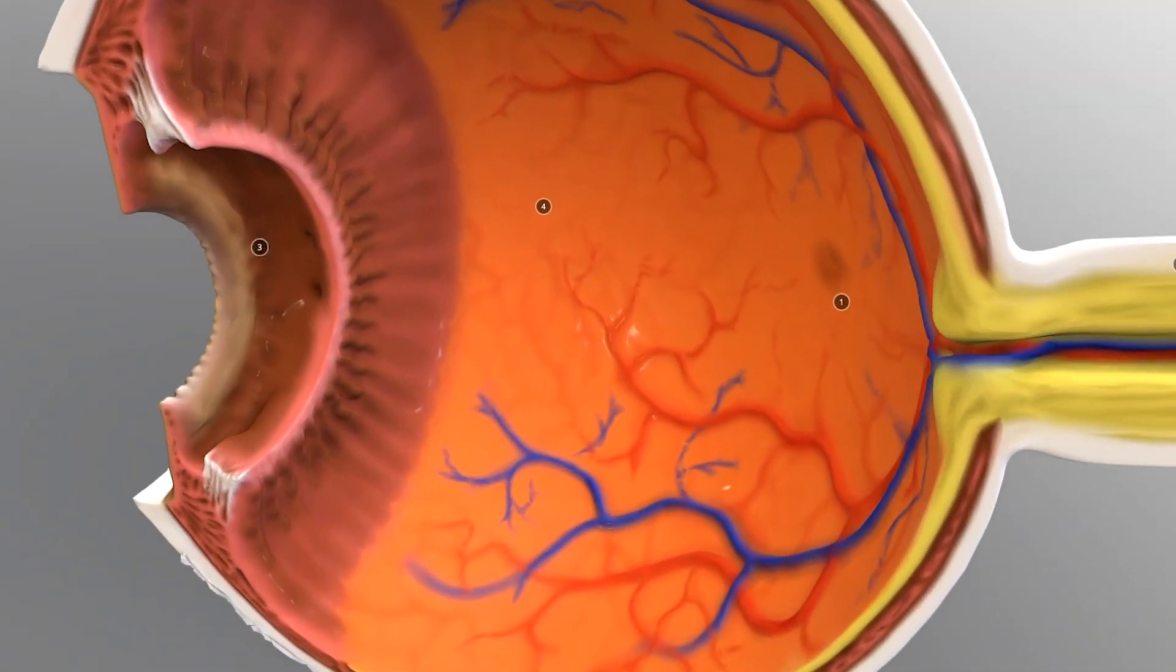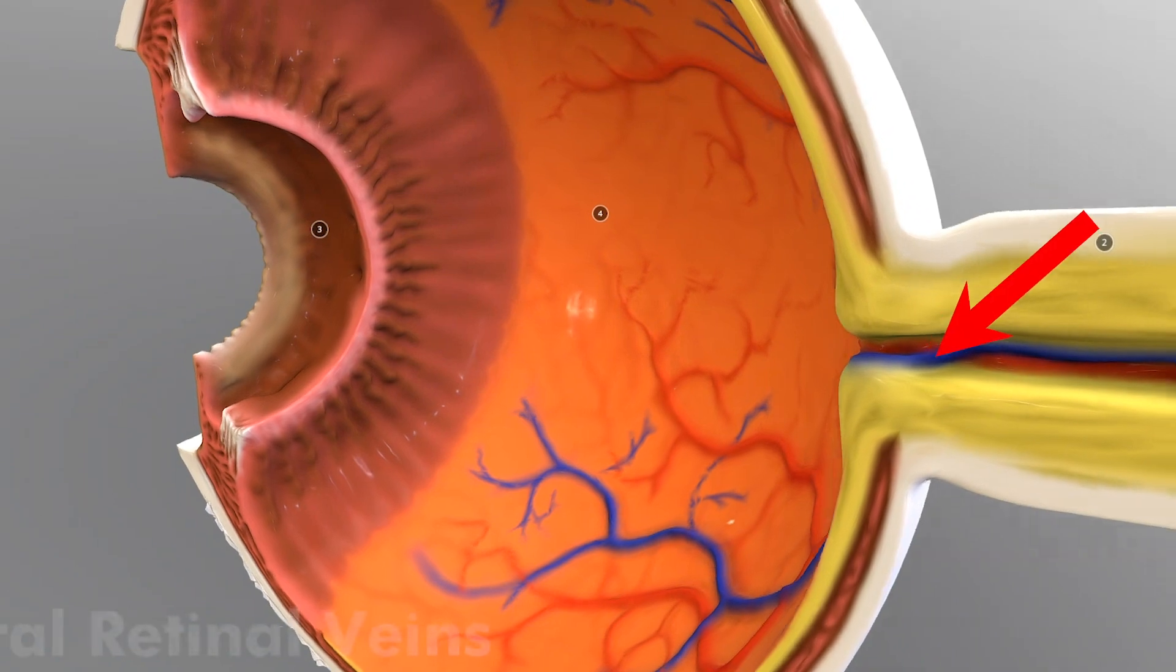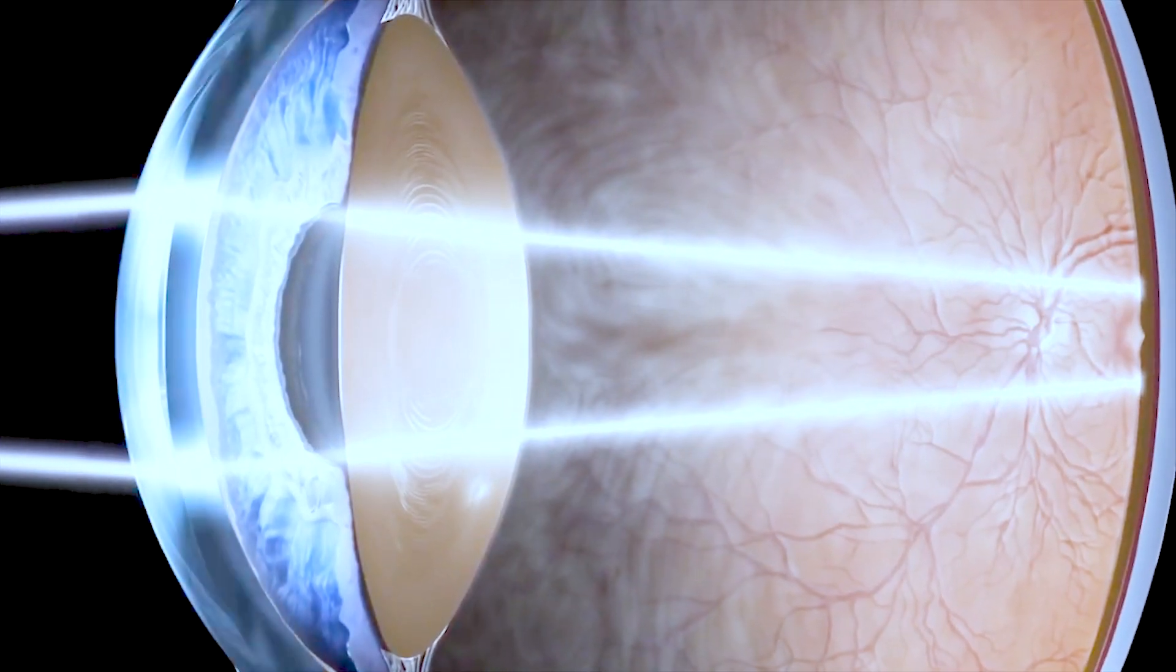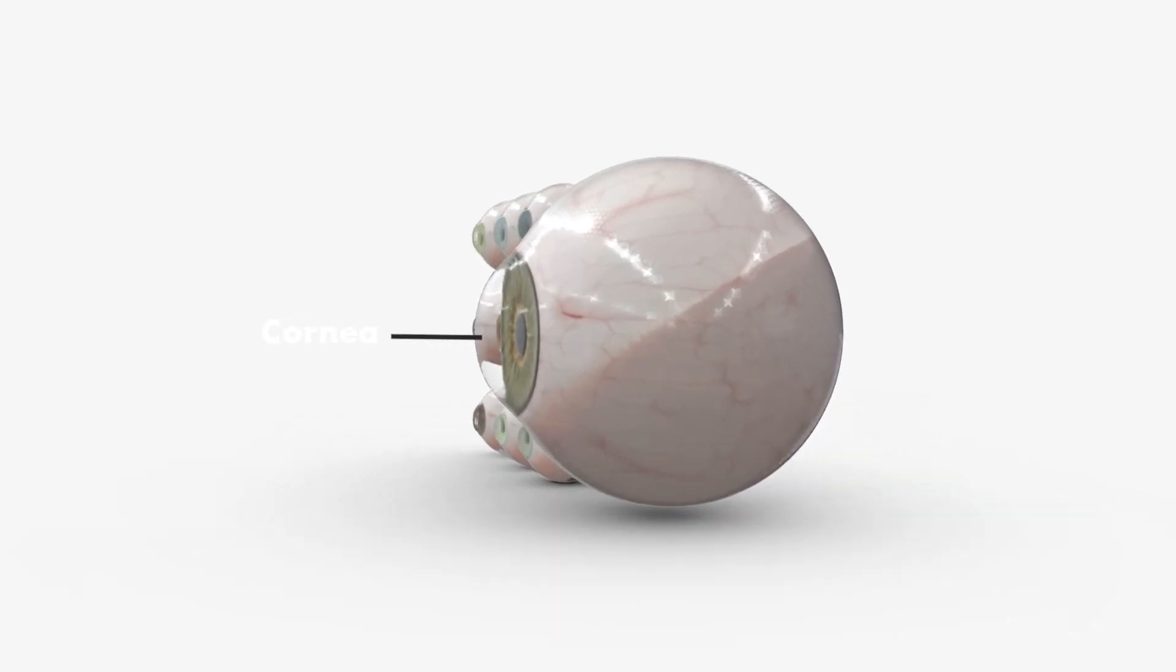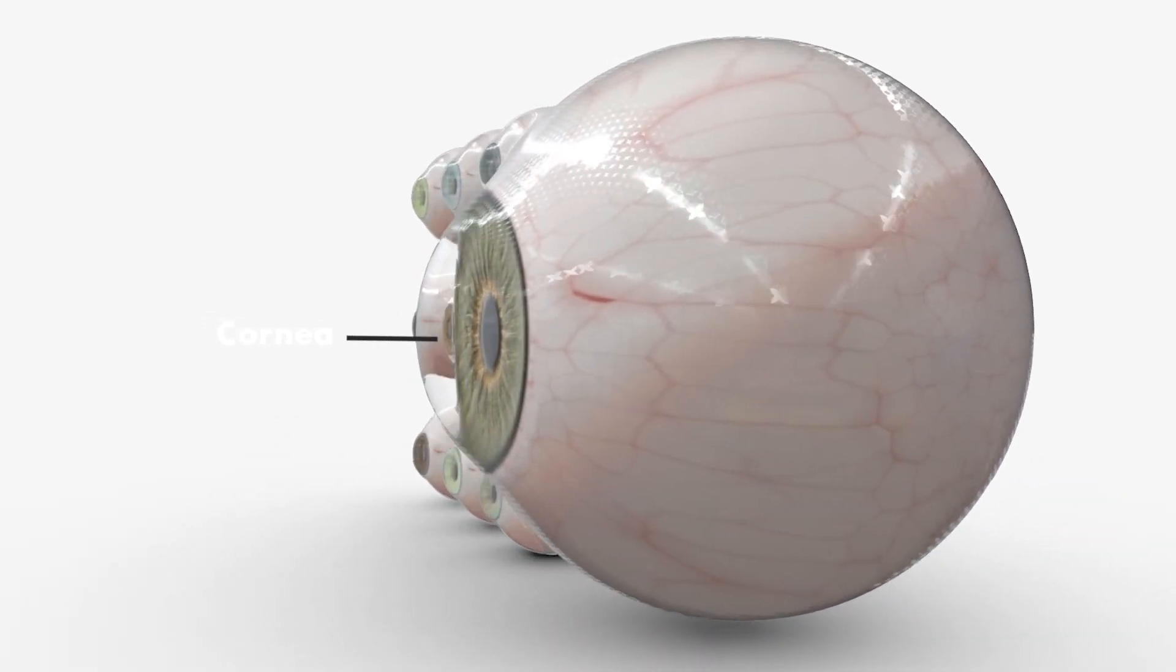Deoxygenated blood of the eye is drained through veins which include central retinal veins. Light enters into the eye through the cornea, which is present in front of the iris and pupil. Cornea acts as a protective covering of the eye.